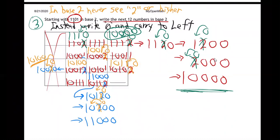So you see how I just keep doing that? Anytime I'm writing a 2, I instead write a 0 and carry. And then the last one, let's go back to the red here. 11001. I'm done. I did the next 12 numbers in base 2. I counted in base 2.